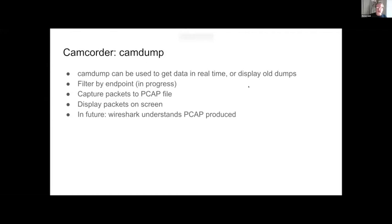Sorry about that. I'm not sure where I dropped, so I'm just going to start over on this slide. Cam-dump is a program that goes along with Camcorder and allows you to get the data out of CAM in real time or display old dumps you've collected. I'm currently adding filtering by endpoint, which means if you've got a RAID controller like an NPR or NPS controller with multiple devices attached, you can just trace one. For things like NVMe where there's typically only one device, it's not a big deal, but for RAID controllers it can be quite helpful.